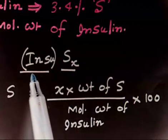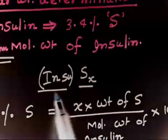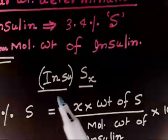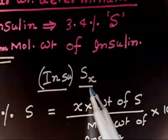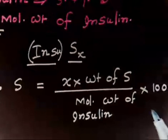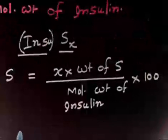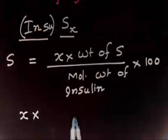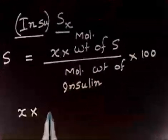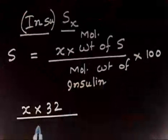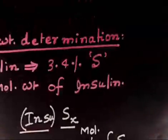In the formula, 'Insu' is the condensed form for all other atoms in insulin. Sulfur is written outside with x atoms. The atomic weight of sulfur is 32. So the percentage of sulfur becomes: (x × 32) / M × 100, and the question states this equals 3.4%.